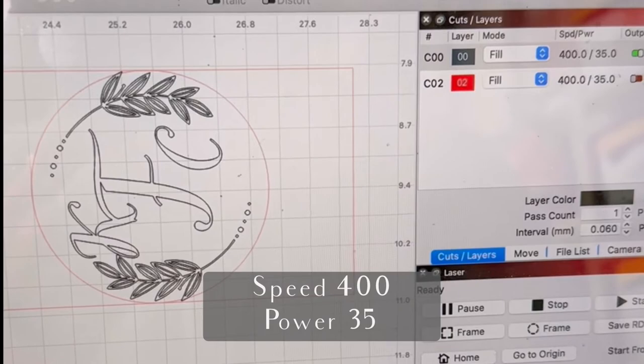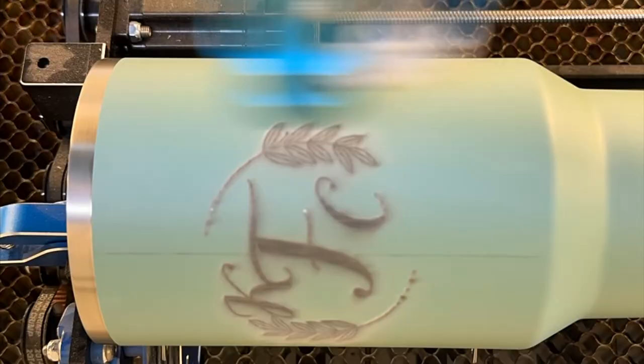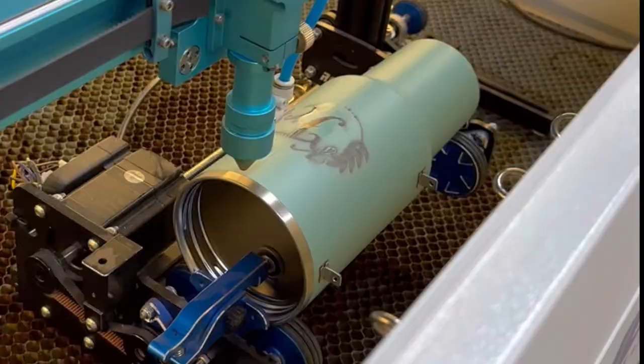I went back to my computer to change the settings now to 400 speed, 35 power and send it right over to the laser to get it engraving. It only takes around three minutes for a logo like this to be engraved.